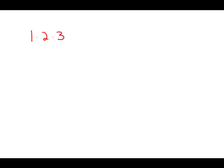So we have 1 times 2 times 3, and we don't need to multiply by 4 because we already have a factor of 2 — I'm just going to multiply by another 2, which means it would be divisible by 4. Then multiply by 5. We don't need to multiply by 6 at all because 3 times 2 gives us the 6, then times 7.